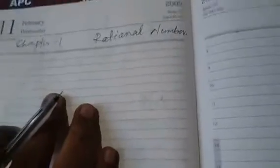Look at this. The chapter number is 1. It is rational number. Students, you know what is rational number? Rational numbers are those numbers which are expressed in terms of fraction.